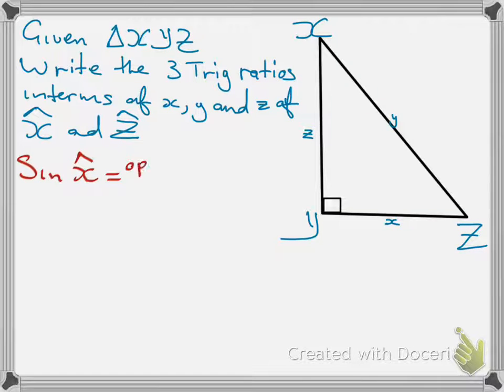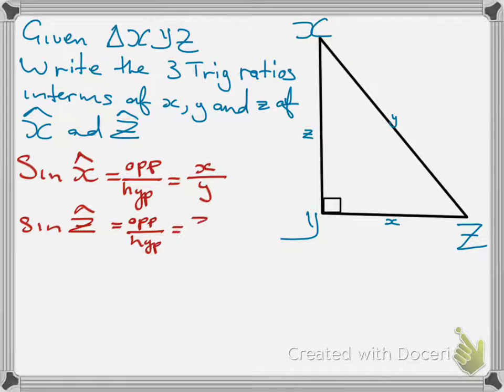So, the solution, the first trig ratio, sine of angle X opposite over hypotenuse will be equals to X all over Y. Sine of angle Z will be, the side Z, which is opposite all over hypotenuse, which is the opposite side Z and the hypotenuse side Y.